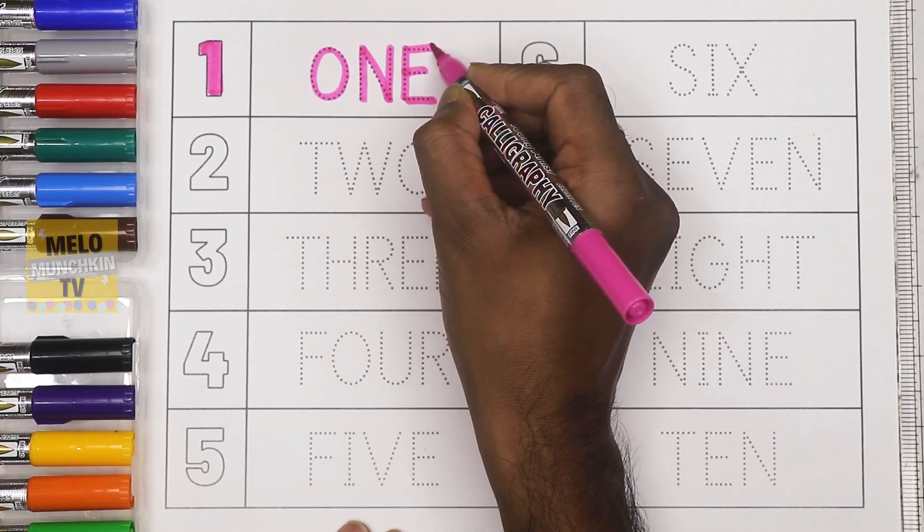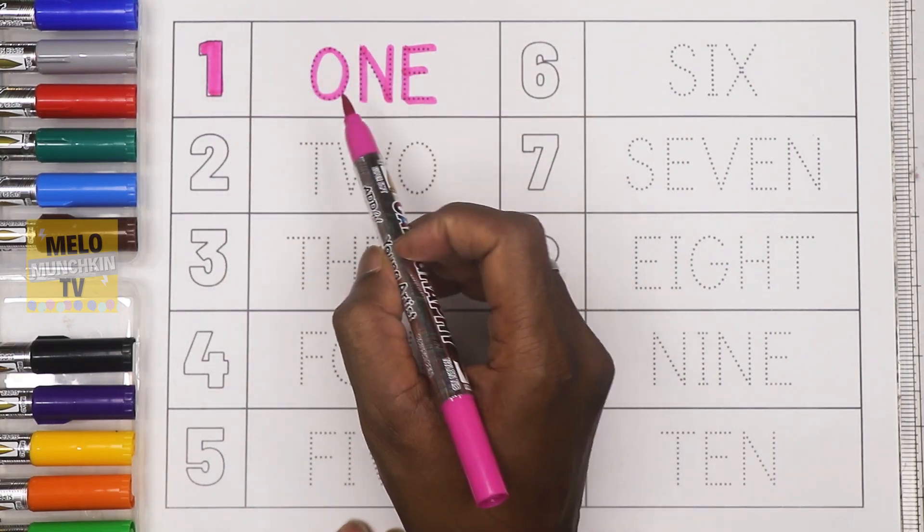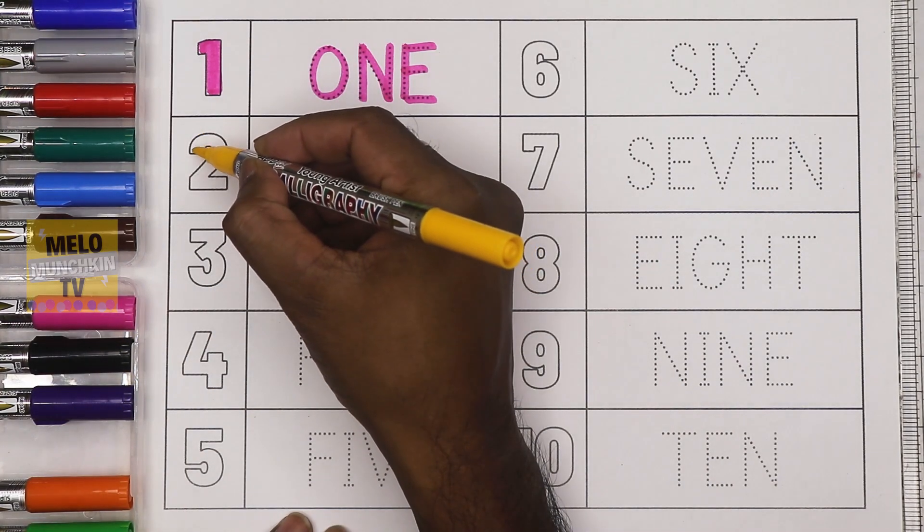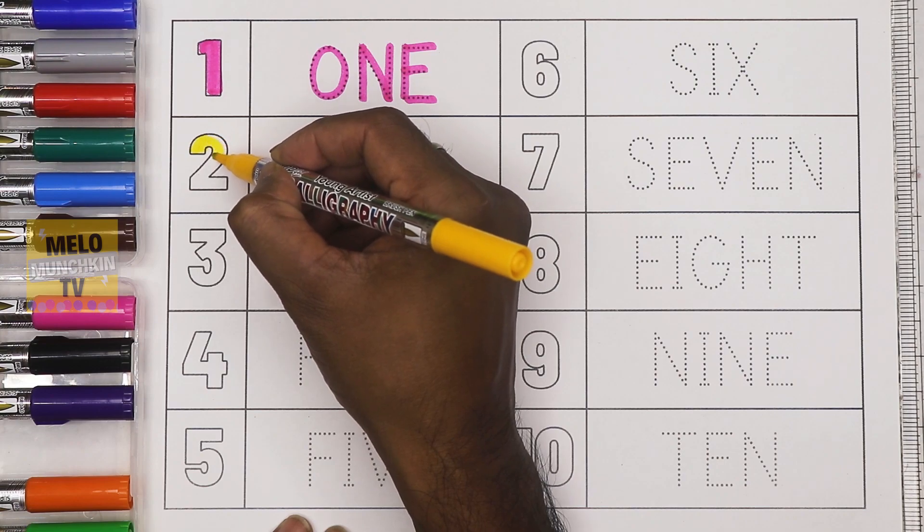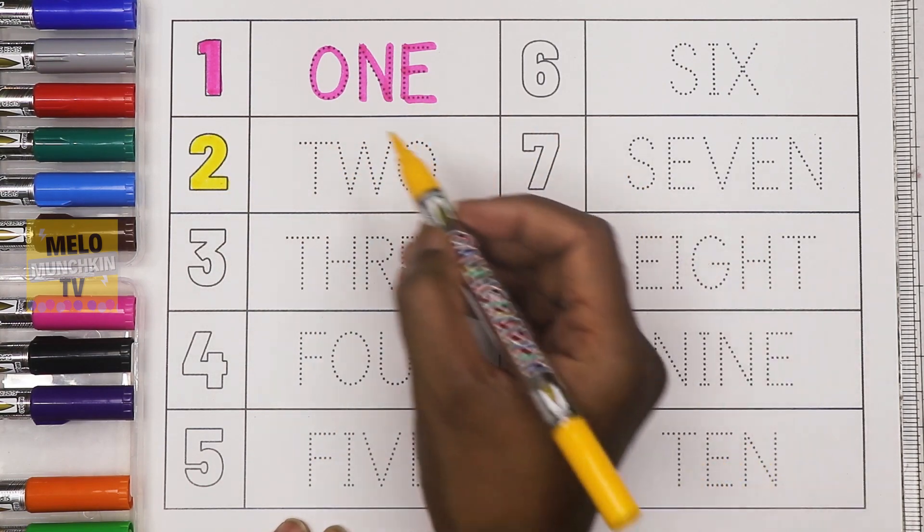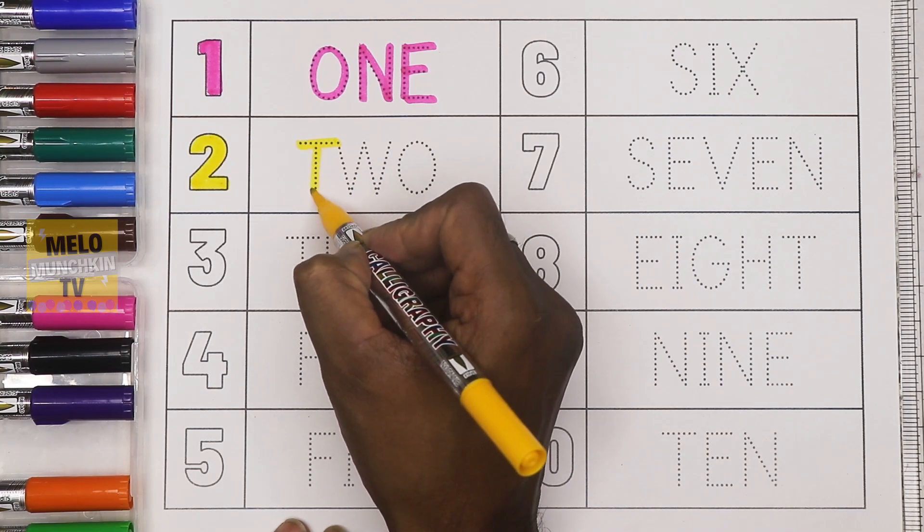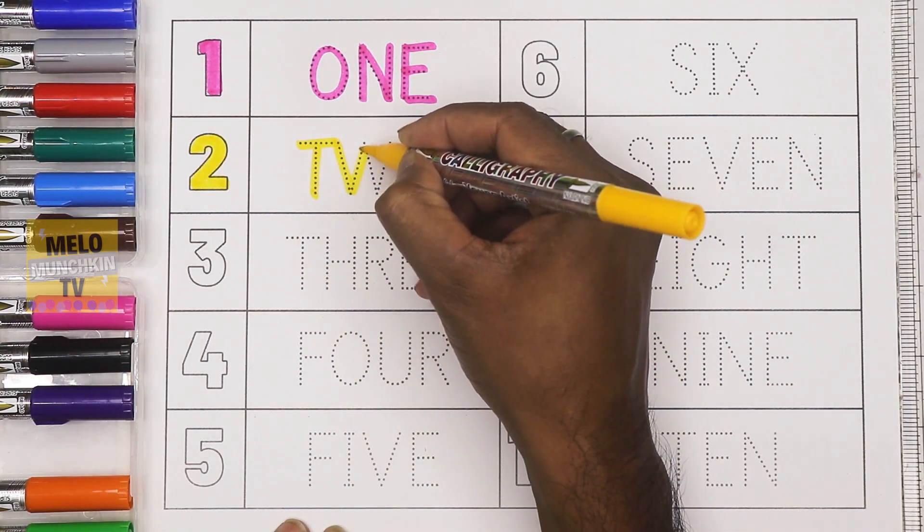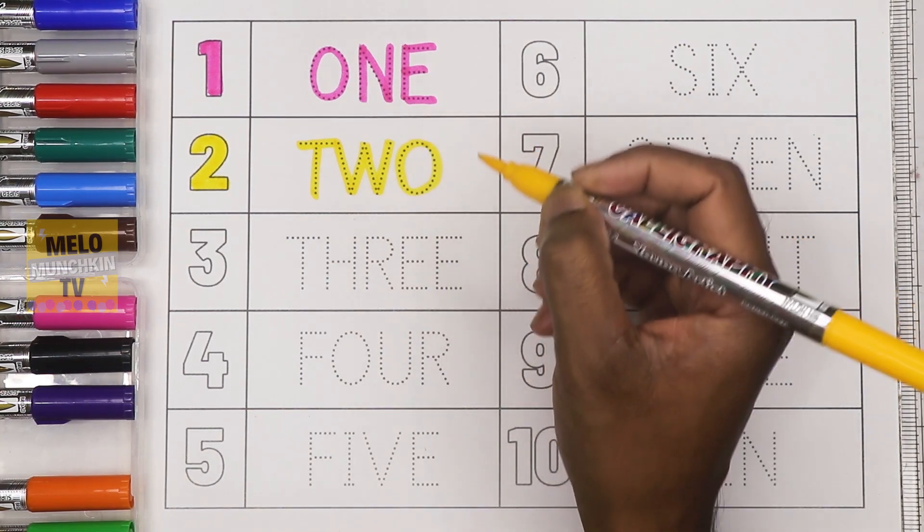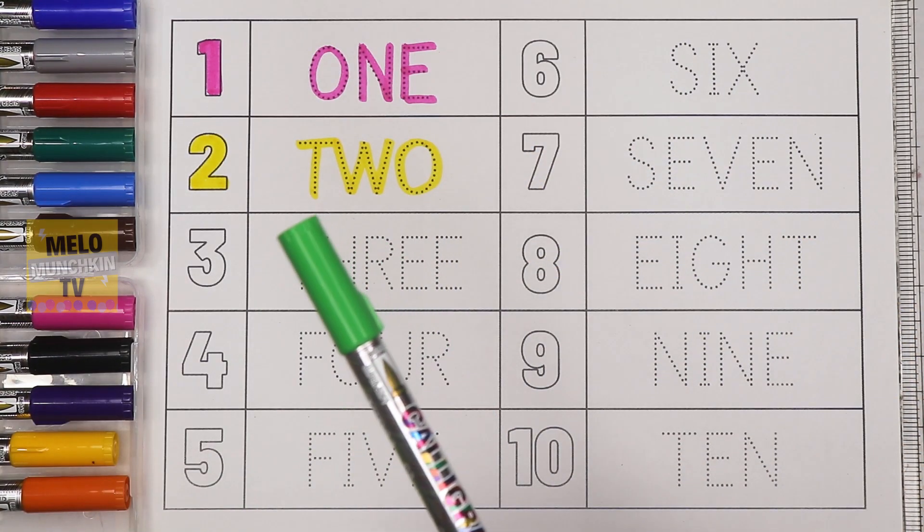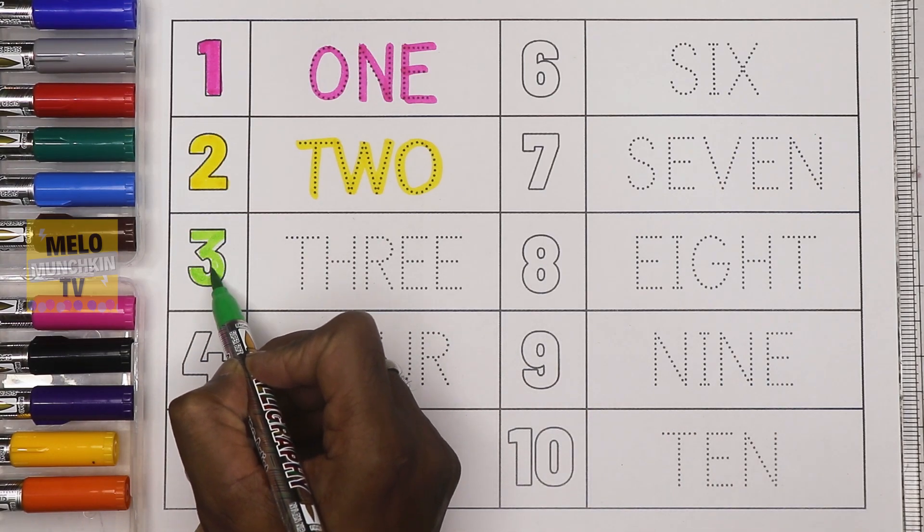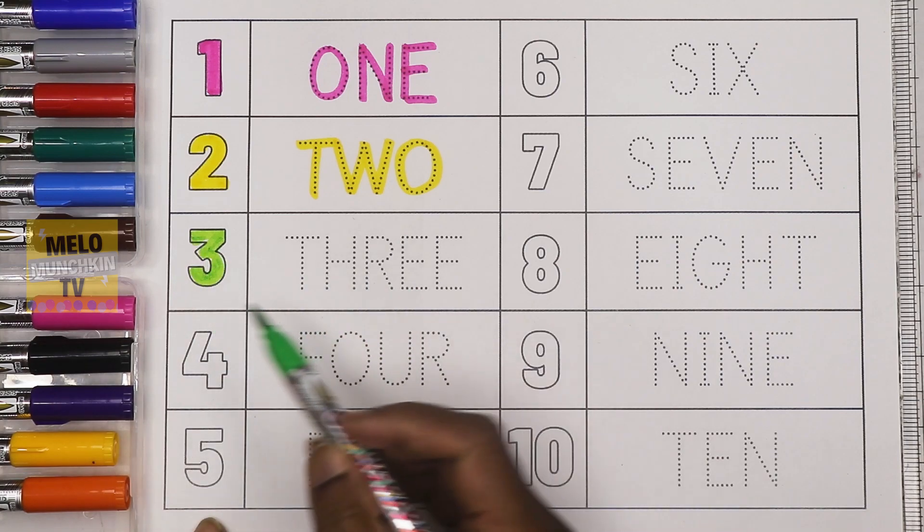Yellow color. Two. This is number two, T-W-O, two. Green color. Three. This is number three, T-H-R-E-E, three.